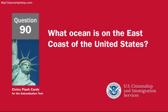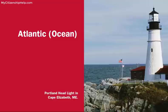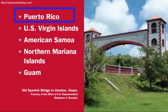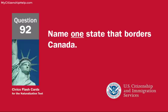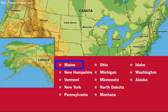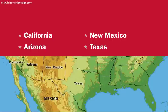What ocean is on the east coast of the United States? The Atlantic Ocean. Name one U.S. territory. Puerto Rico. Name one state that borders Canada. Maine. Name one state that borders Mexico. California.